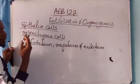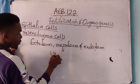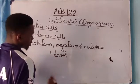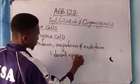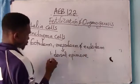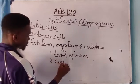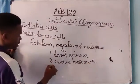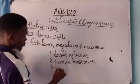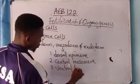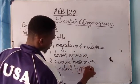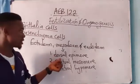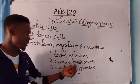The emphasis here is on the mesoderm. The mesoderm splits into three parts: one, the dorsal epimere; two, the central mesomere; and three, the ventral hypomere. The mesoderm of the embryo divides into these three distinct parts.